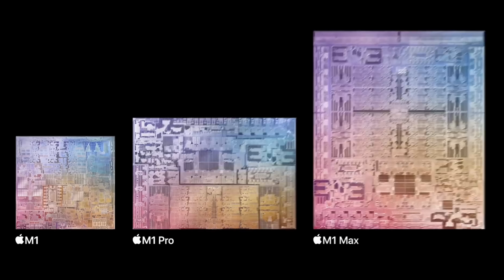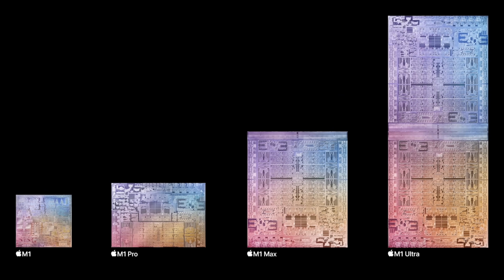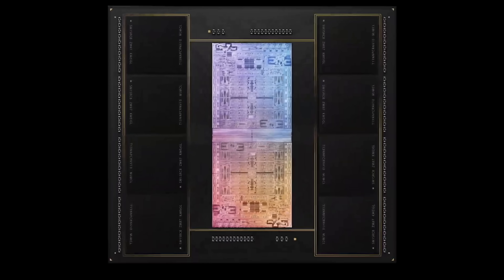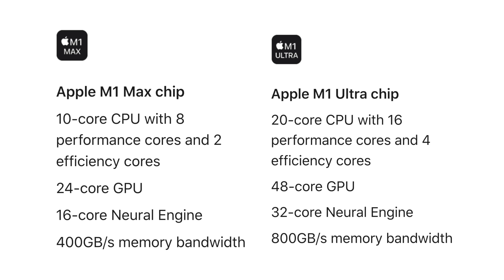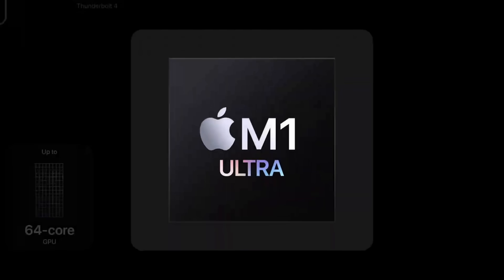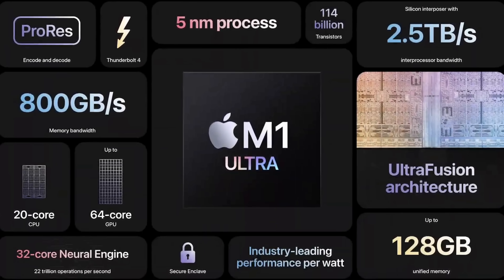You need to remember that the M1 Ultra is essentially two M1 Max SoCs fused together. Because of that, you get double of many of those components — double the CPU power, double the GPU power, and double the other features of that chip, including twice the size neural engine, a 32-core neural engine, and double the video encode and decode engines that you have on the M1 Max.